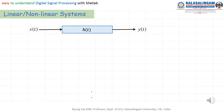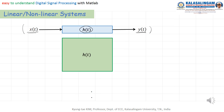There is one system with input x(t), output y(t), and impulse response h(t). First of all, when we apply a times x(t), if we obtain a times y(t), we call this the principle of homogeneity.